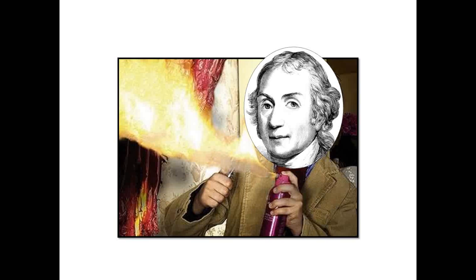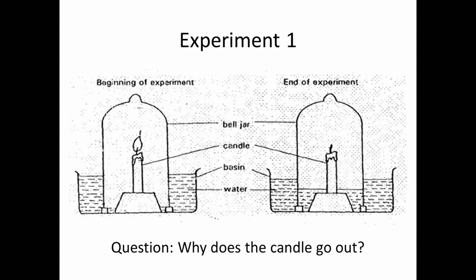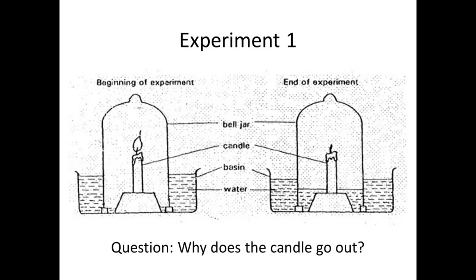So now we're in the mid-1700s. Joseph Priestley is a British chemist really interested in gas — what are the different compounds that exist in air? Naturally, he started playing with fire. His first experiment involved a candle in a bell jar, a glass container sealed up with wax and water at the base. He noticed the candle was extinguishing itself, and he hypothesized that the candle was corrupting the air around it.